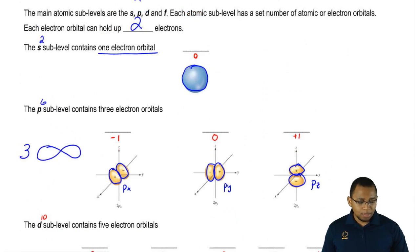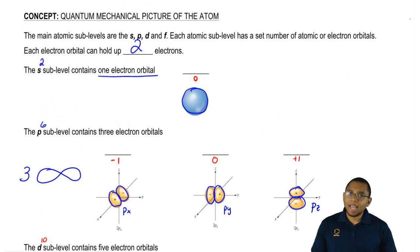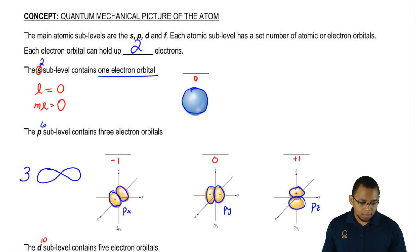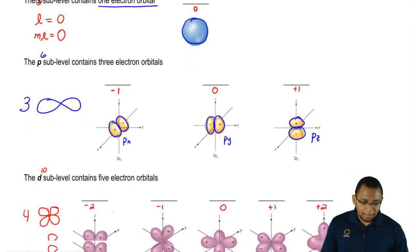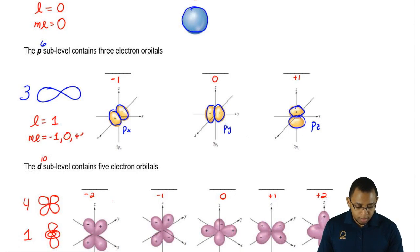You may ask, how do I know these are the numbers for them? Remember the M sub-L value is connected to the L value. Since the letter is S, then my L value equals zero. If my L value is zero, then my M sub-L is the range of that, so it's also zero. If the letter is P, then L equals one, and the range of that for M sub-L would be negative one, zero, plus one.